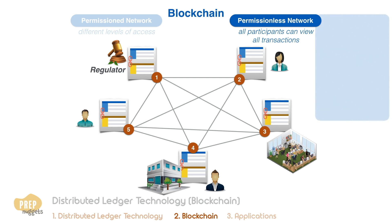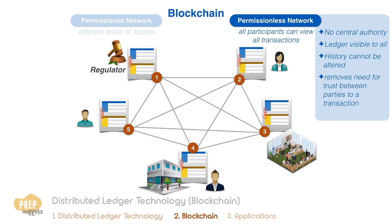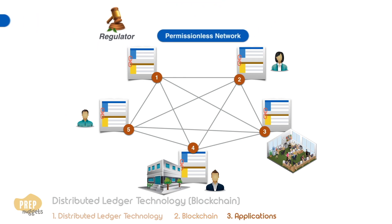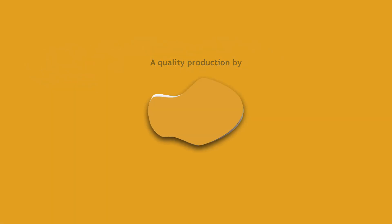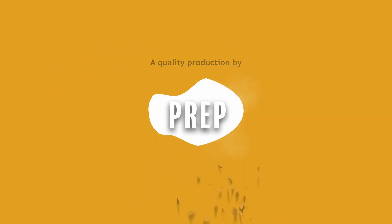Permissionless networks have no central authority, giving them the advantage of having no single point of failure. The ledger becomes a permanent record visible to all, and its history cannot be altered. This removes the need for trust between the parties to a transaction. Most cryptocurrencies, notably Bitcoin, are based on permissionless networks.